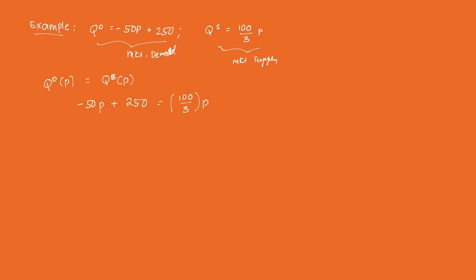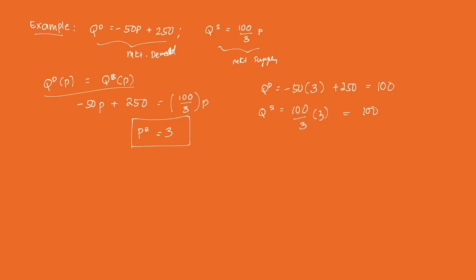Solving for P, we get the equilibrium price PE = 3. To get the equilibrium quantity, we plug PE into either the market demand or market supply. Plugging into QD: −50(3) + 250 = 100. Plugging into QS: (100/3)(3) = 100. Both give the same result, as the equilibrium condition requires.